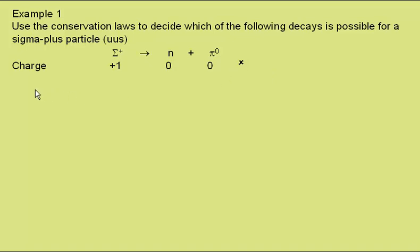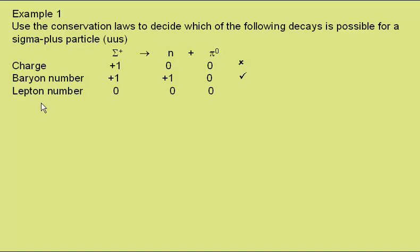For completeness we'll go through the others. Baryon number: the sigma plus is a baryon and so has a baryon number of plus one, as is the neutron. The pi zero is a meson and has a baryon number of zero, so we have plus one on each side — in terms of baryon number this interaction would be possible. And for lepton number, none of these particles are leptons, so in terms of lepton number this also would be possible. However, with just one conservation law broken, the interaction is not possible.